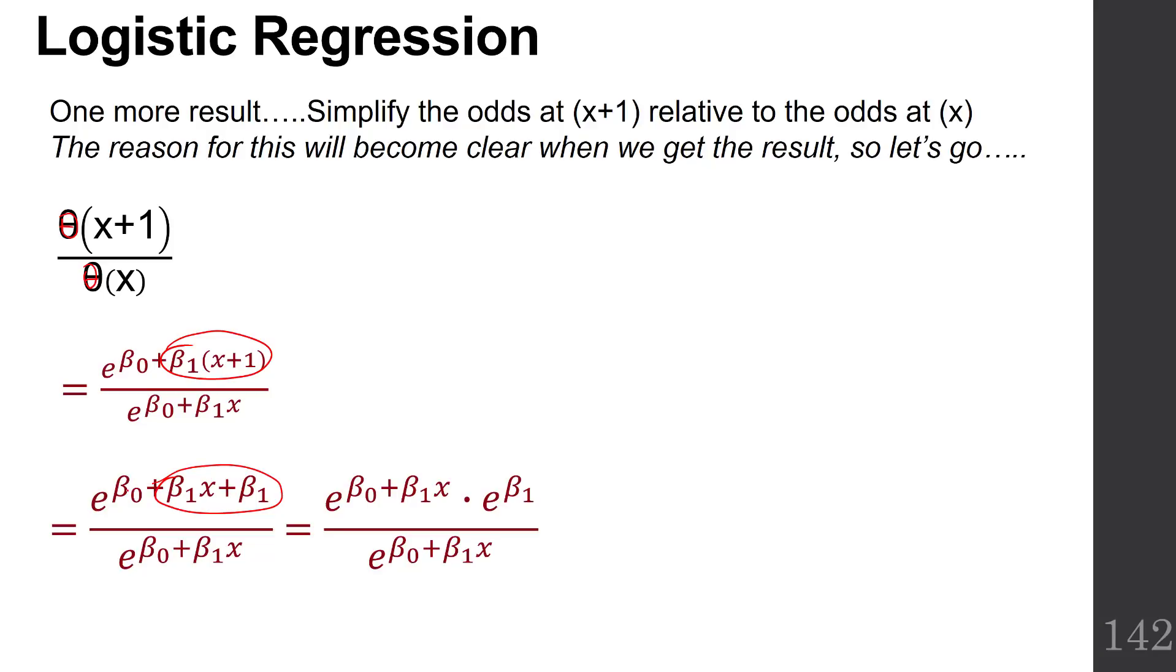So we just separated that out. And then we see that our e to the beta naught plus beta 1x cancels, and we're simply left with e to the beta 1.